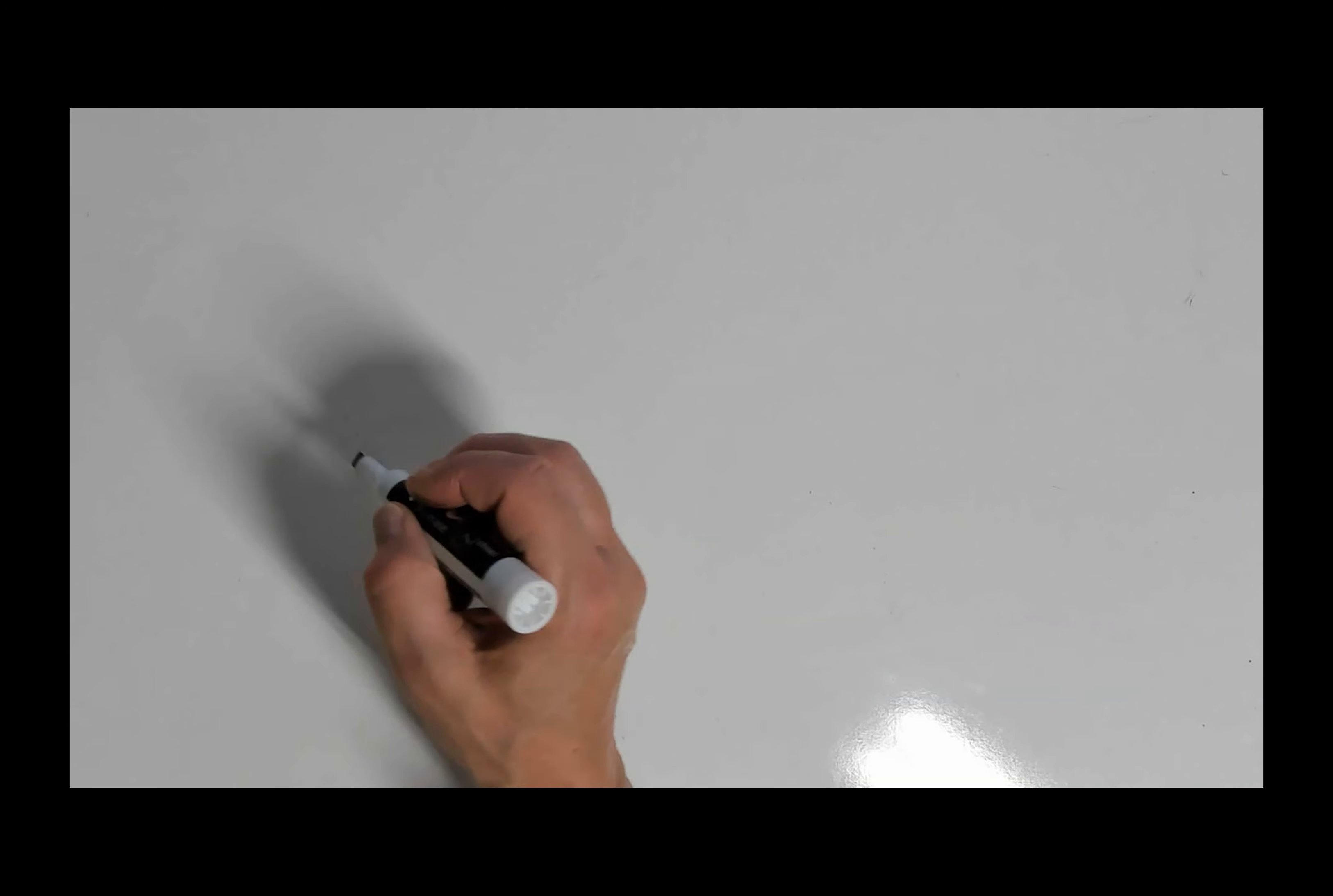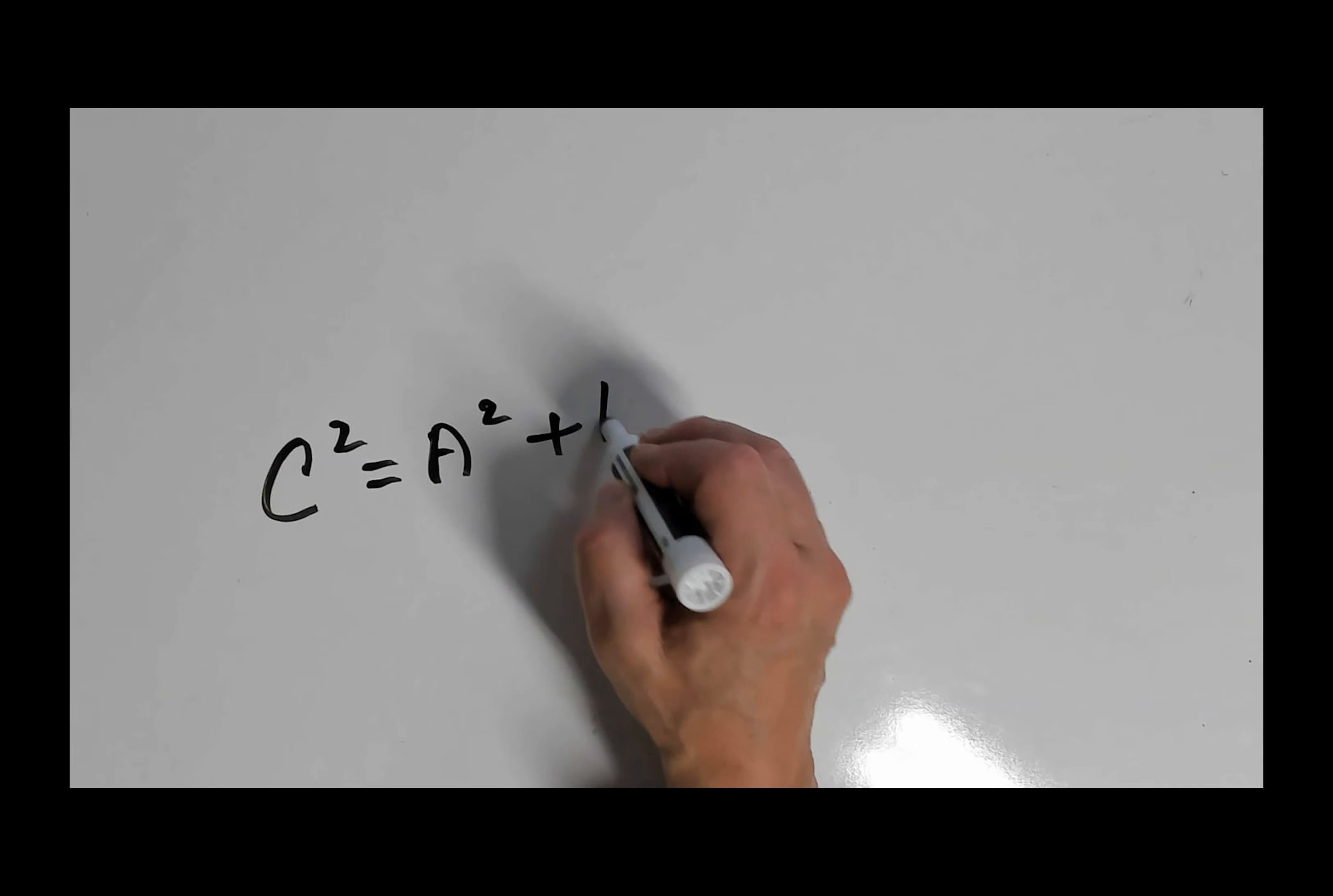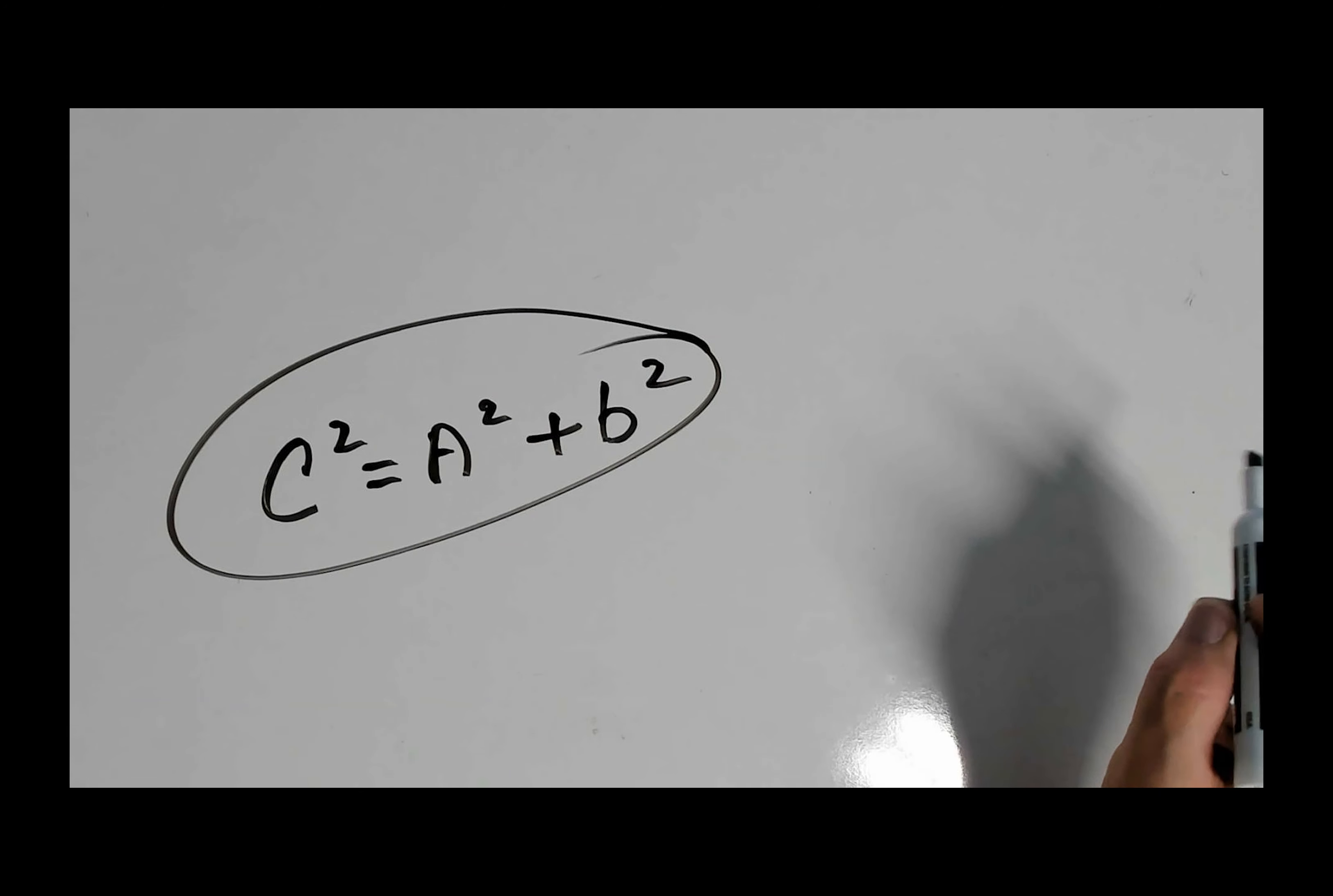Okay, the formula that we will be using to figure out our length for our guy lines is the Pythagorean Theorem. That is C squared is equal to A squared plus B squared. So let's go ahead and put this to an example here with an antenna mast that we're going to put up.